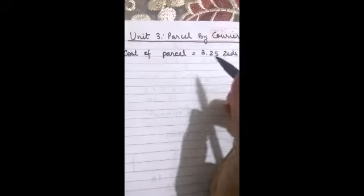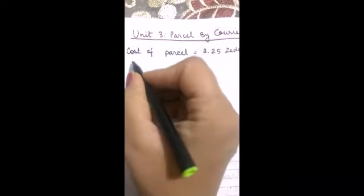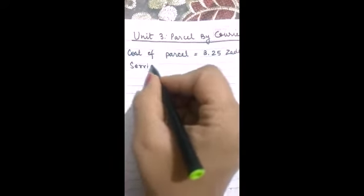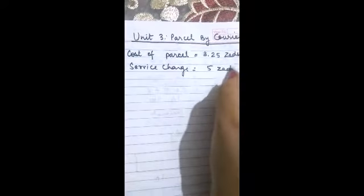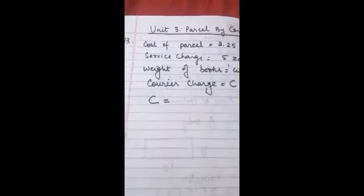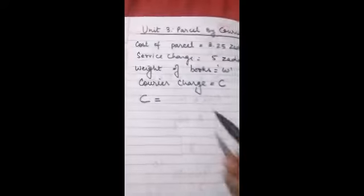Thus we come to the question number 13, unit 3 parcel by courier. In this question it is given that cost of parcel is 3.25 Zs and there is a fixed service charge which is 5 Zs. Thus we see that courier charge is to be taken as C.